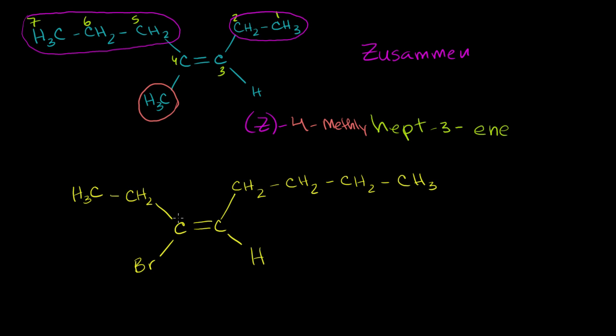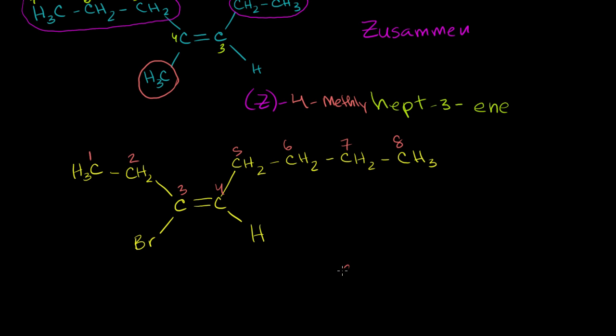Let's identify the longest carbon chain here. So it looks like one, two, three, four, five, six, seven, eight carbons. Double bonds are closer to the left-hand side, so we'll start numbering here: one, two, three, four, five, six, seven, eight. So just the main chain is oct. Let me make sure I have some space here. It is oct-3-ene.